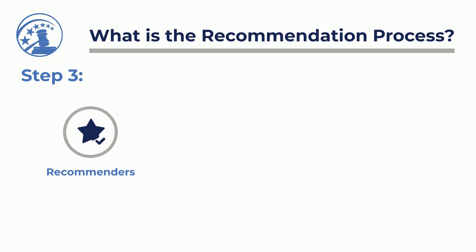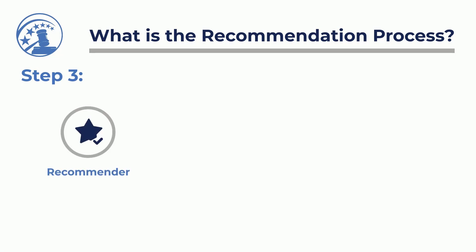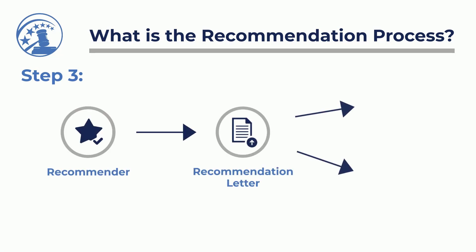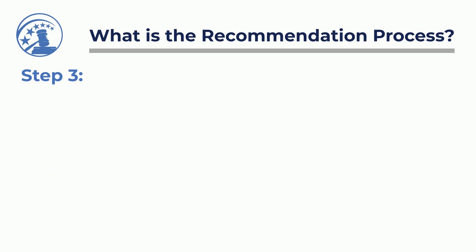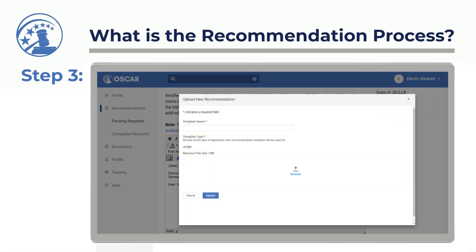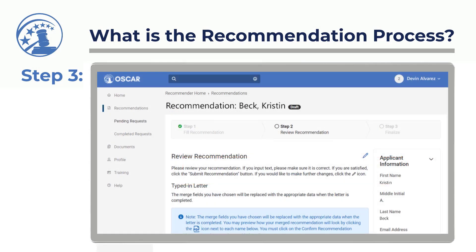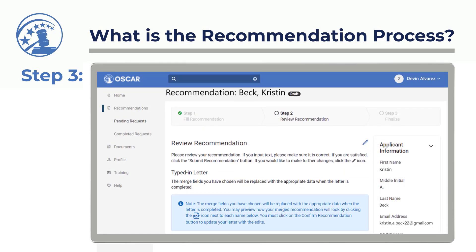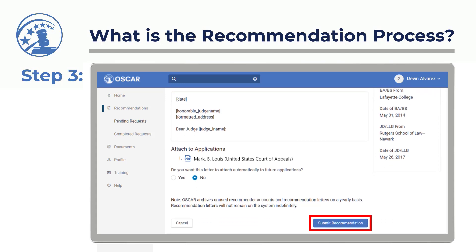Step 3: Recommenders submit electronic recommendation letters for each applicant. Recommenders can create recommendation letters using the online editor or upload an already created letter. OSCAR's online editor tool provides easy-to-use templates for recommendation letters. Alternatively, recommenders can upload individual recommendation letters as PDF or Word files. Once the recommendation letter is uploaded, recommenders can review the letter and then select Submit Recommendation to complete the process.